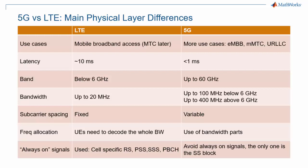Moving on to more detailed points on the physical layer: the subcarrier spacing, fixed in LTE at 15 kHz, can now take values between 15 and 240 kHz. Regarding frequency allocation, an LTE UE placed in a 20 MHz cell is required to decode the whole bandwidth, and signals of interest can span the whole bandwidth. On the other hand, 5G UEs do not need to support the whole bandwidth — remember that the bandwidth in 5G NR can be much larger. Signals of interest can be confined to a subsection of bandwidth, and bandwidth parts are one of the new concepts that help with this capability.